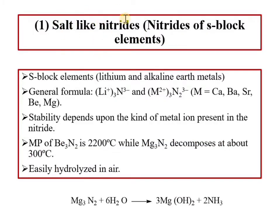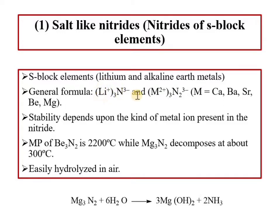Salt-like nitrides are formed by the s-block elements, such as lithium and alkaline earth metals. Just as we saw salt-like carbides formed by alkali and alkaline earth metals, these metals form salt-like nitrides. The general formulas are M₃N when formed by lithium or an alkali metal, and M₃N₂ when formed by an alkaline earth metal.